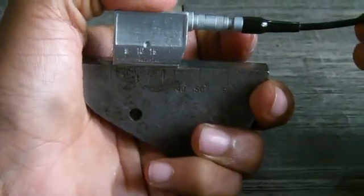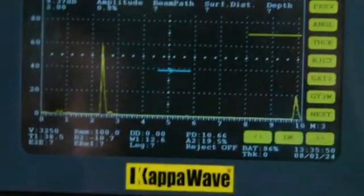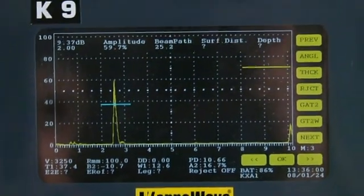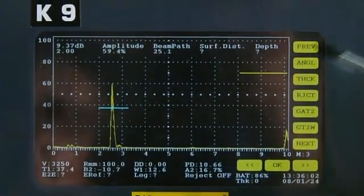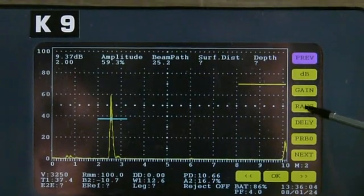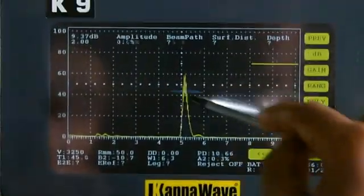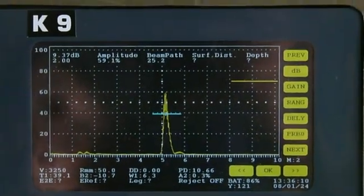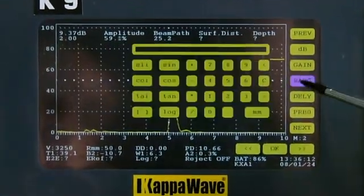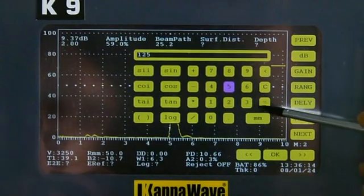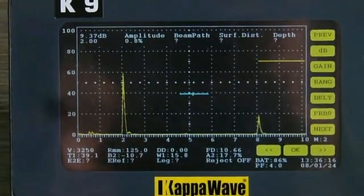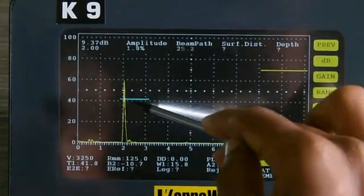Once the zero is correctly set, then you may change the range as desired. For example, from 100mm, you may change it to something like 50mm, or 125mm, or 200, 250mm, whatever.